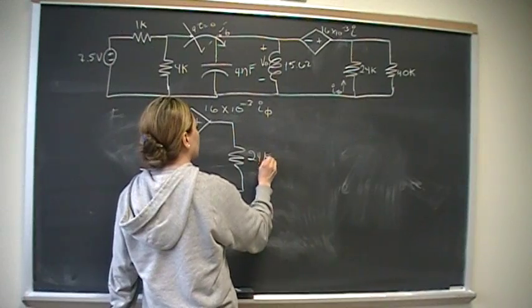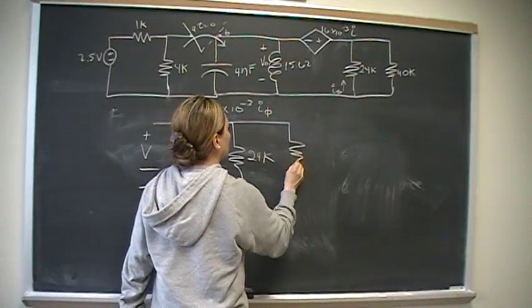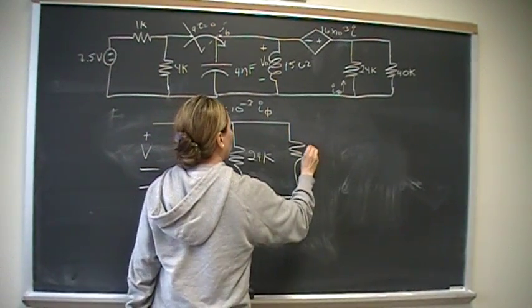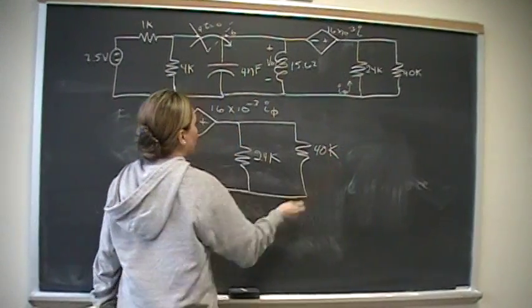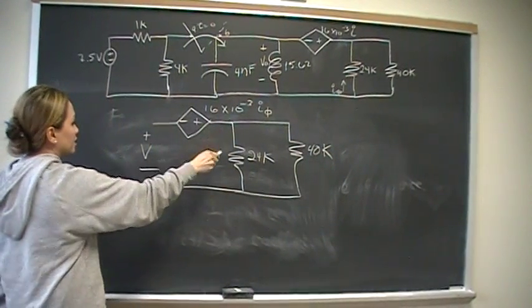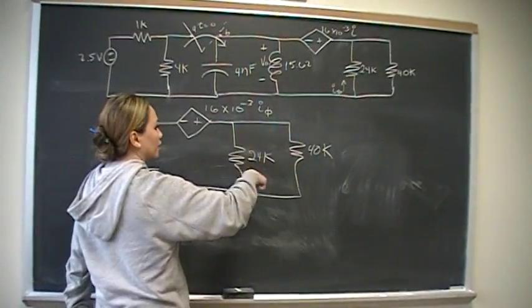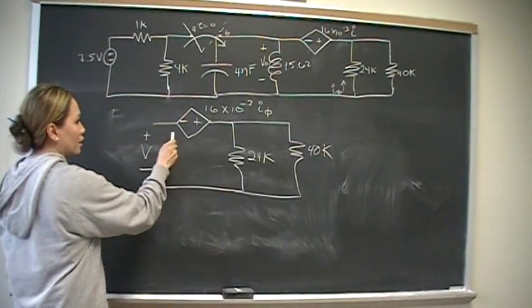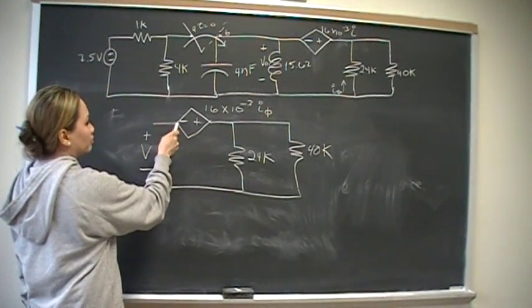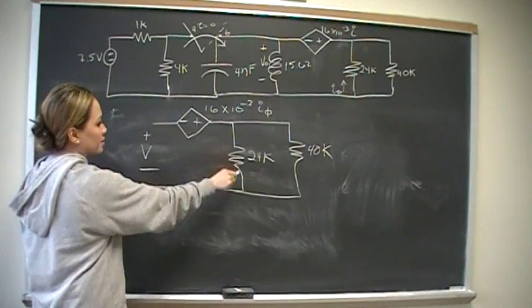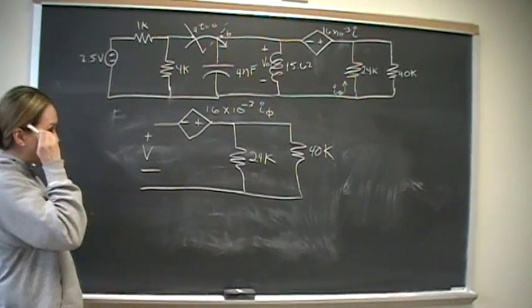24 kilo ohms here, and in parallel with 40 kilo ohms. Note that the equivalent resistance is not just this. Because the added source, the dependent voltage source, adds resistance to the system. So how are we going to solve that?